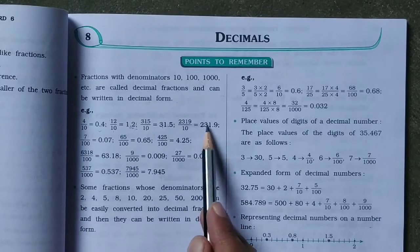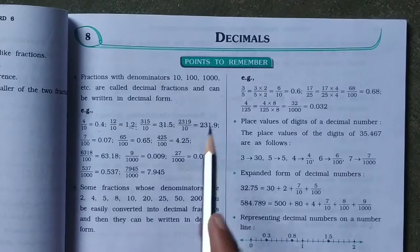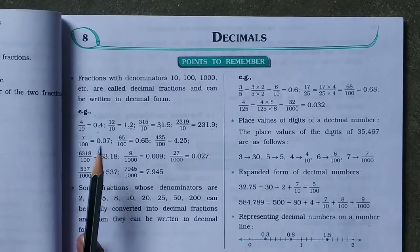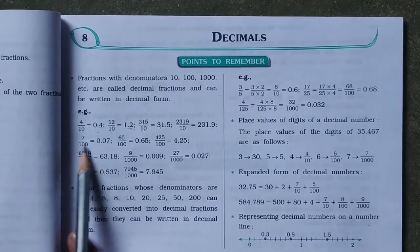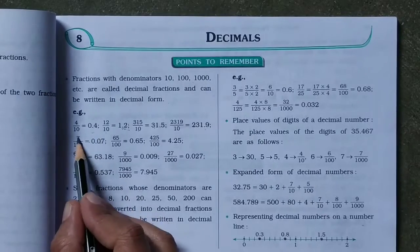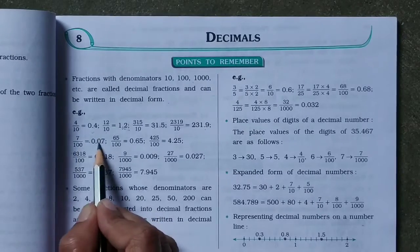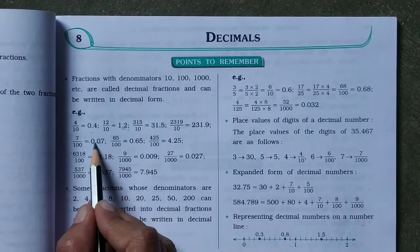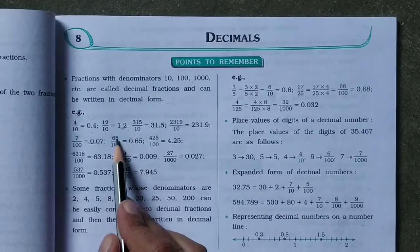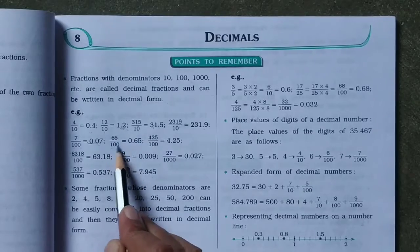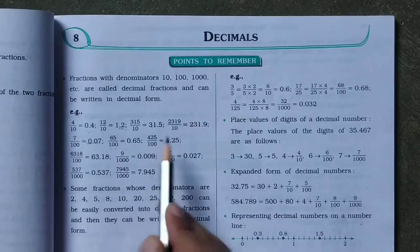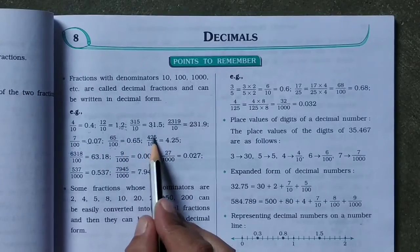Seven by 100 — here two zeros, two numbers after point, only one number and second is nothing, so write 0.07. Sixty-five by 100 — two zeros, two numbers, giving 0.65. Four hundred twenty-five by 100 — two zeros, two numbers: 4.25.